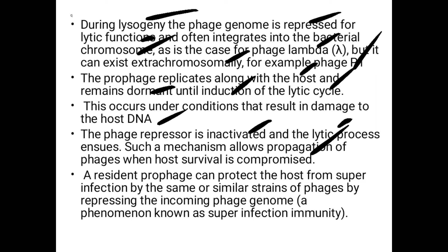Such a mechanism allows propagation of the phage when host survival is compromised. A resident prophage can protect the host from superinfection by the same or similar strain of phages by repressing the incoming phage genome. This phenomenon is known as superinfection immunity.